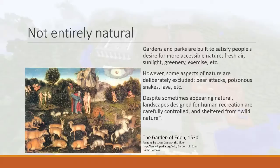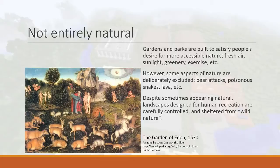There are a lot of things in nature that you don't want — bear attacks, poisonous snakes, scorpions, sharks, or being in a blizzard. A garden usually excludes those unwanted things. So despite parks and gardens sometimes appearing quite natural — and you might say 'let's get in touch with nature and go to a park' — despite the feel of being close to trees, flowers, and fresh air, designed landscapes are actually very carefully controlled.